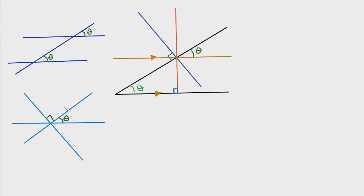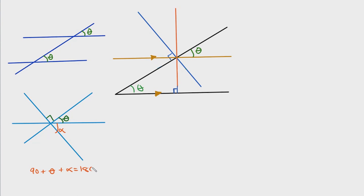Isolating those lines, we can use the supplementary rule — meaning that if you have any line and you measure the angle from that line to the other side, that equals 180 degrees. So we could say this is alpha, and we can sum up these angles to 180 degrees: 90 plus theta plus alpha equals 180, or in other words, alpha equals 90 minus theta. So we can say this is 90 minus theta, and what that translates in this diagram is 90 minus theta.